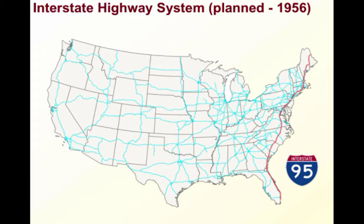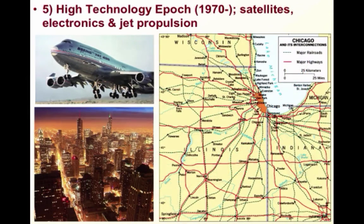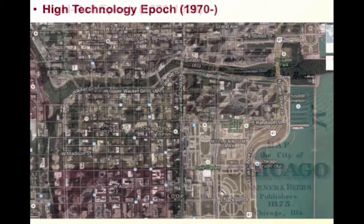Urban heat islands have also become an issue, where metropolitan areas retain more heat during the day due to the concrete, asphalt, and buildings in the urban landscape, unlike suburban and rural areas. Finally, we come to the High Technology Epoch, which has gone from 1970 to today, influenced by the era of jet propulsion and increasingly complex electronic, satellite, computer, and network-based technologies. We can see, for example, Chicago back in 1875 during the Steel Rail Epoch, progressing forward into the High Technology Epoch we see today.